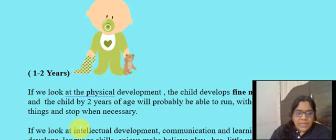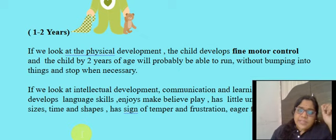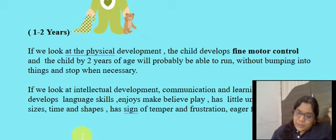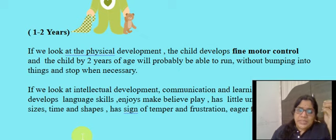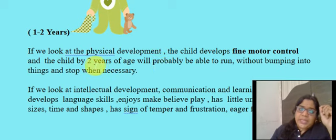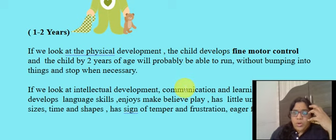In physical development, the child's fine motor skills and gross motor skills develop. Gross motor is all about large muscles, while fine motor is all about hand and finger movements — small muscle movements. Children of two years of age will probably be able to run without bumping into things, especially in gross motor development they become strong.